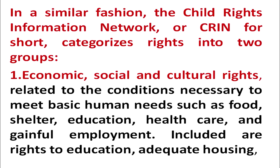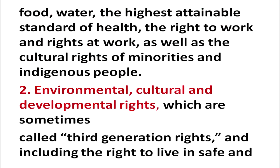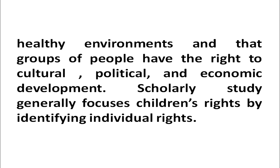The Child Rights Information Network, or CRIN, categorizes rights into two groups: first, economic, social, and cultural rights related to conditions necessary for basic human needs such as food, shelter, education, health care, adequate housing, water, standard of health, right to work, and cultural rights of minorities and indigenous people; second, environmental, cultural, and developmental rights, called third generation rights, including the right to live in safe and healthy environments and the right of groups to cultural, political, and social development.